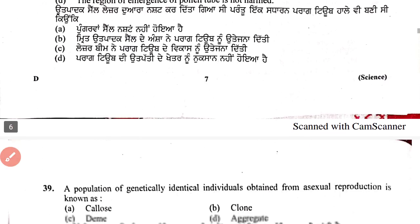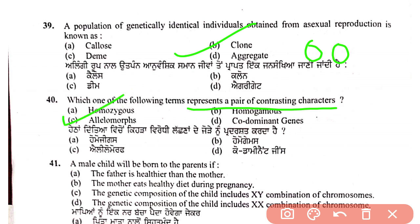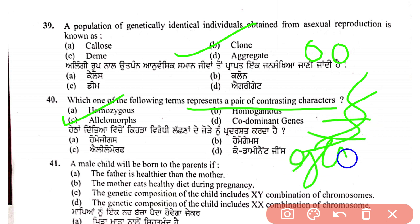Question 39: genetically identical individuals obtained from asexual reproduction are known as clones. A segment of DNA that controls a specific trait is known as a gene.